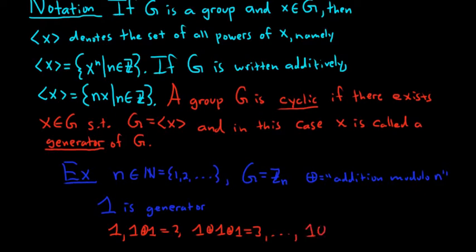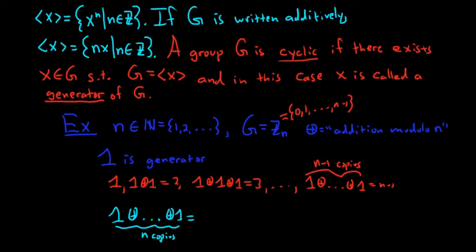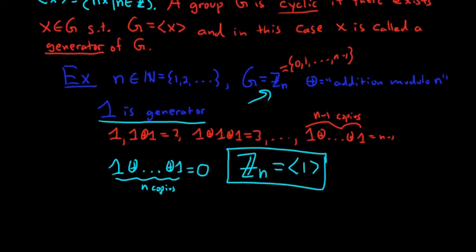If you have n minus 1 copies of 1 added together, you get n minus 1. This group is all the numbers from 0, 1, all the way to n minus 1. When you have n copies of 1, you get 0, because n mod n is 0. So 1 is always a generator for this group. You would write Z sub n equals angle bracket 1. The additive group of integers modulo n is a cyclic group, always generated by 1.